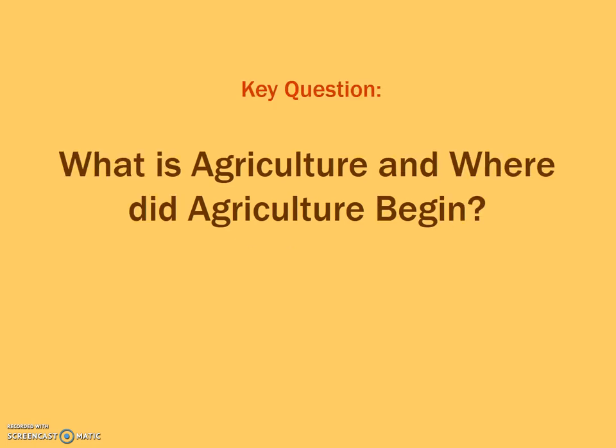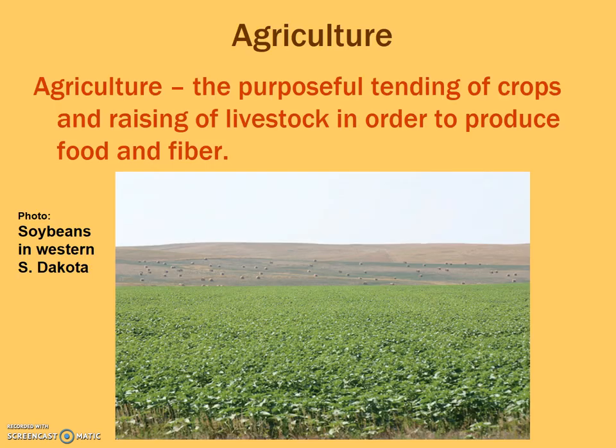The first key question we want to answer is: what is agriculture, and where did it begin? Agriculture is the purposeful tending of crops and raising of livestock. It's important to understand it's not just growing fruits and vegetables, but also the raising of livestock to produce food, leather, hide, or any sort of material that we use from the agricultural product.